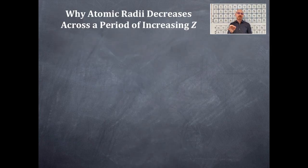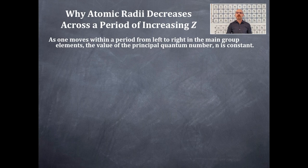Why atomic radii decreases across a period of increasing Z. As one moves within a period from left to right in the main group elements, the value of the principal quantum number n is constant.